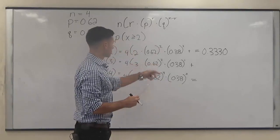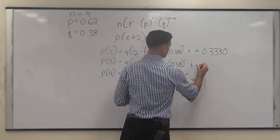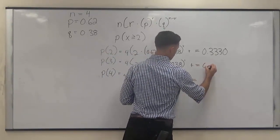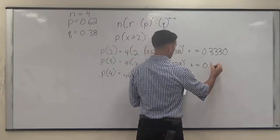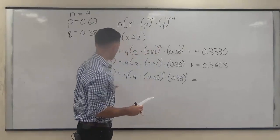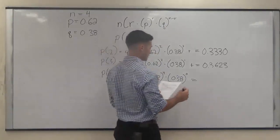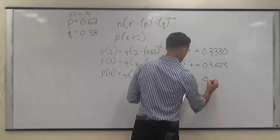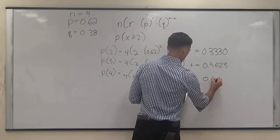The probability of exactly 3 is 0.3623, and the probability of exactly 4 is 0.1478.